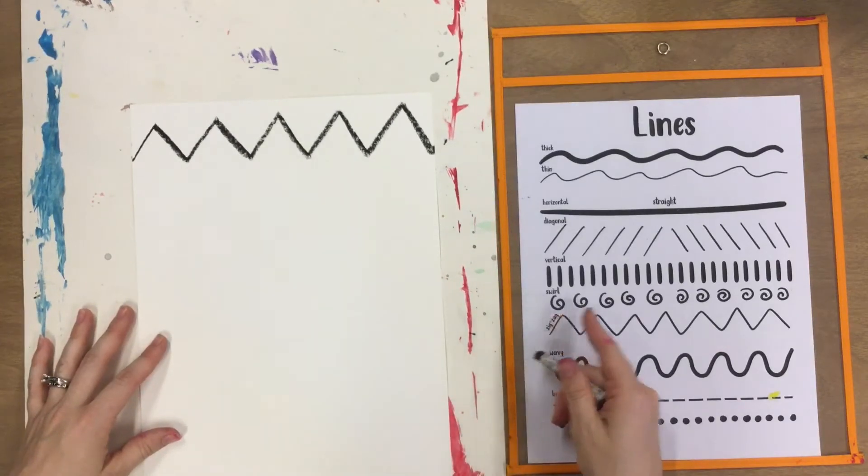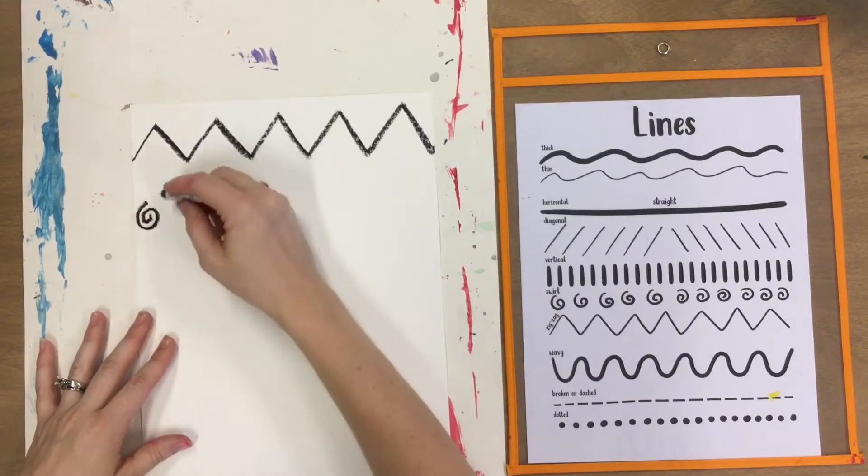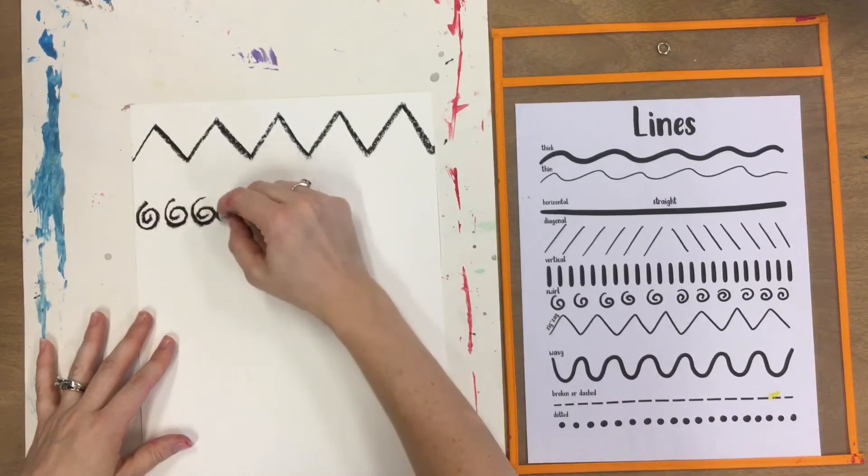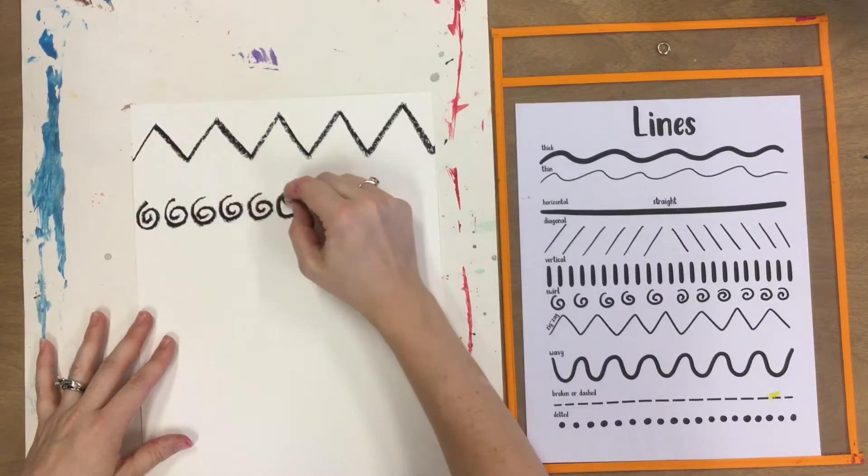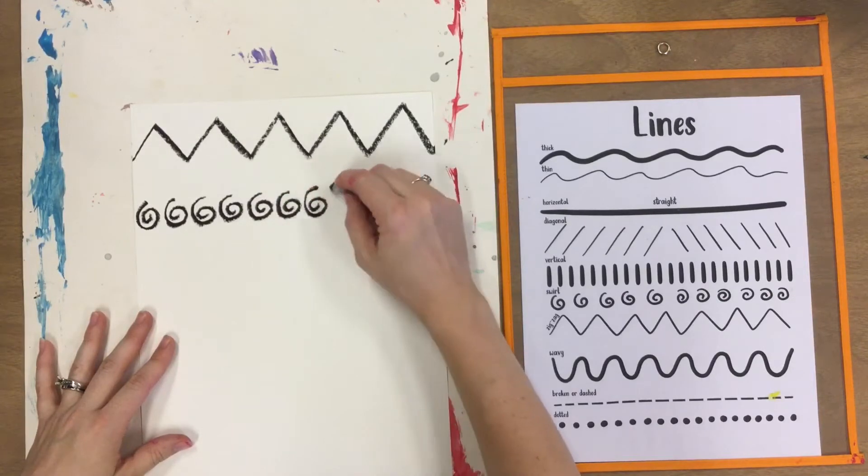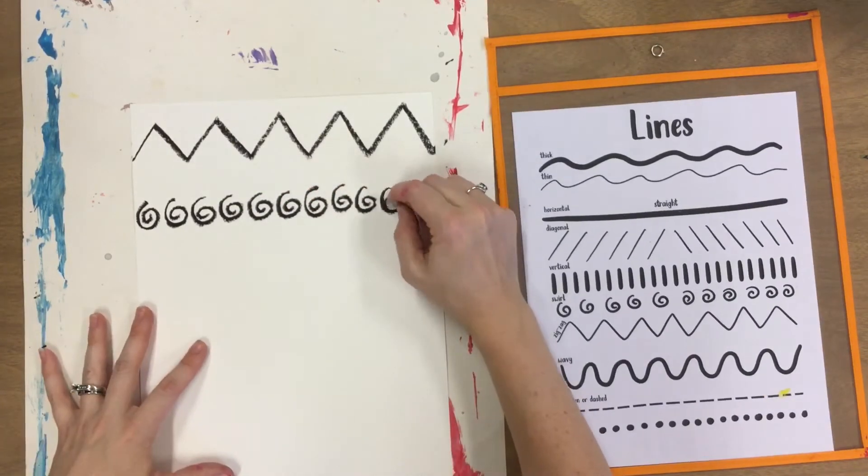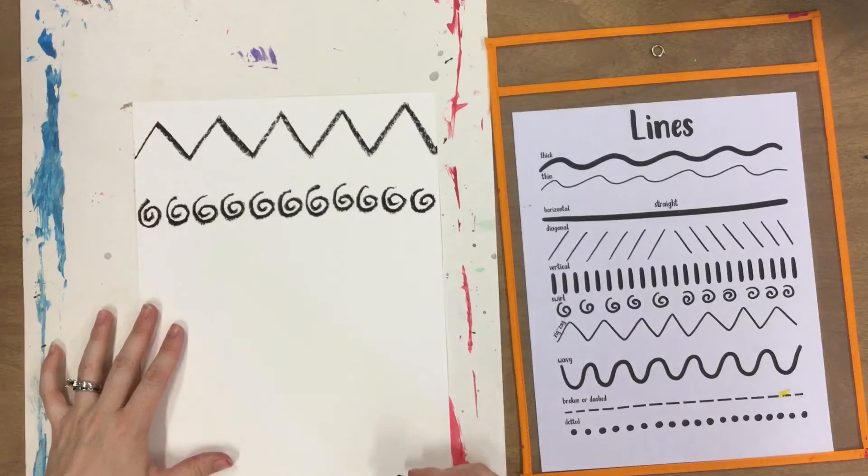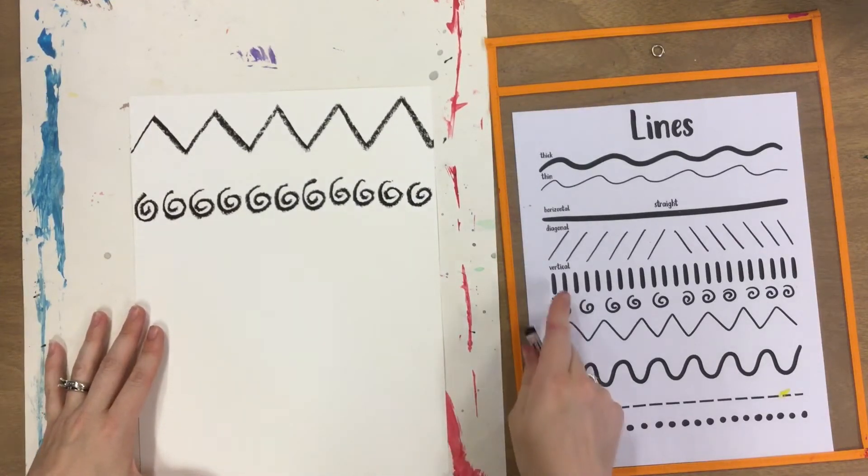I'm going to create a line of swirls or spirals.